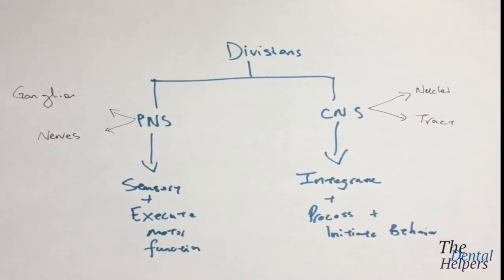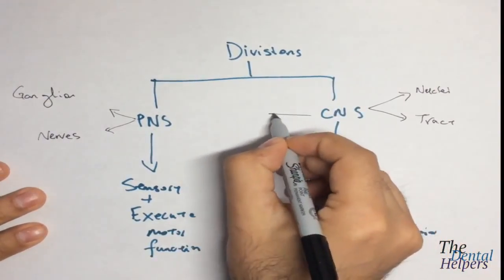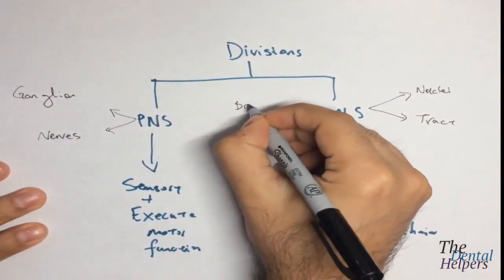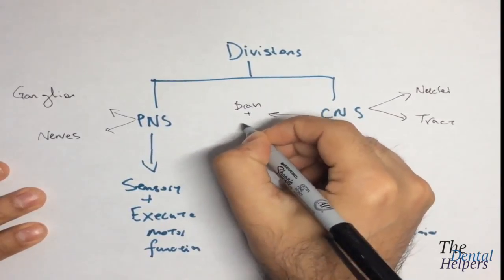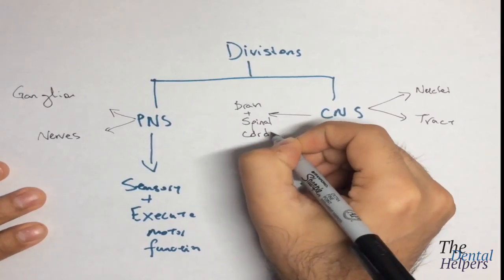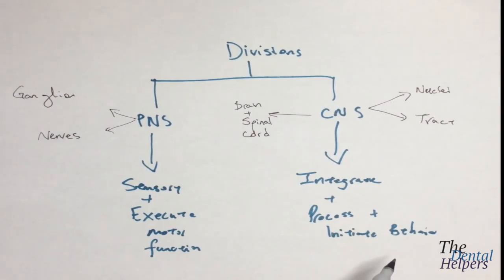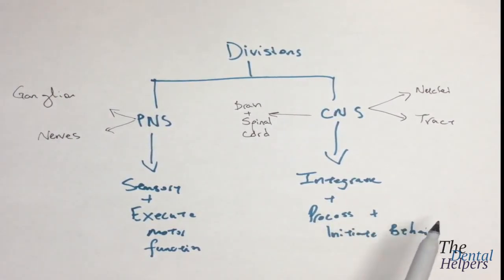The CNS is basically the brain plus the spinal cord. Looking more at the spinal cord, in the last video we talked about the different parts: the meninges, including the dura mater, the arachnoid space, the pia mater, what the denticulate ligament is, and what the filum terminale is.